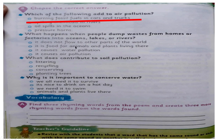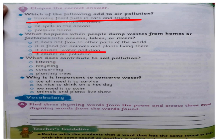What happened when people dump waste from home or factories into ocean, lake, and river? کیا ہوتا ہے جب لوگ گھروں سے اور factories سے گندگی سمندر، lakes اور دریاؤں میں گراتے ہیں؟ It causes water pollution — اس سے پانی کی آلودگی پیدا ہوتی ہے۔